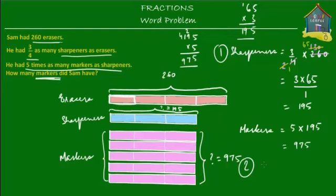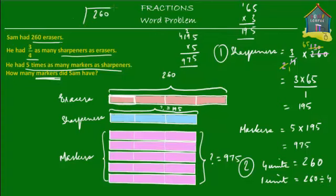We know that four units of the erasers are equal to 260. So how much is one unit equal to? One unit would be 260 divided by four. Now 260 divided by four: four goes into 26 six times giving 24 with a remainder of two, then bring down the zero and four goes into 20 five times with no remainder. So 260 divided by four is equal to 65.